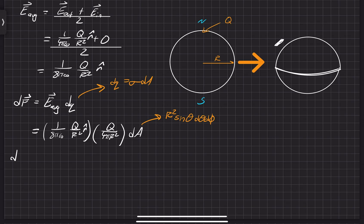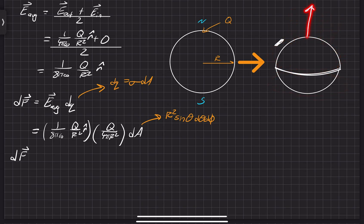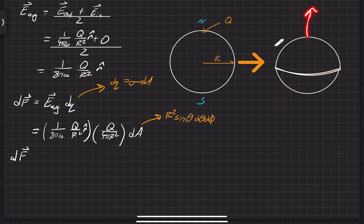We know from symmetry that if we have some charge up here, the force caused by this small dQ acting on another dQ is going to be pointing in one direction with some magnitude. If we look at the force caused by a dQ on the other side, it's pointing in a different direction but a little bit less. Once we integrate over all of this, by symmetry the net force is going to be in the upward z-direction. So the net force is going to be in the z-direction.